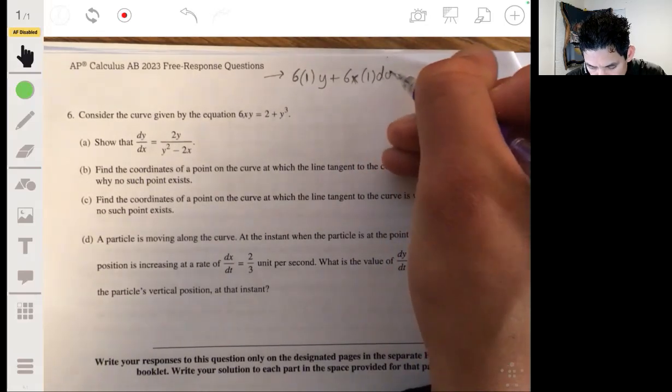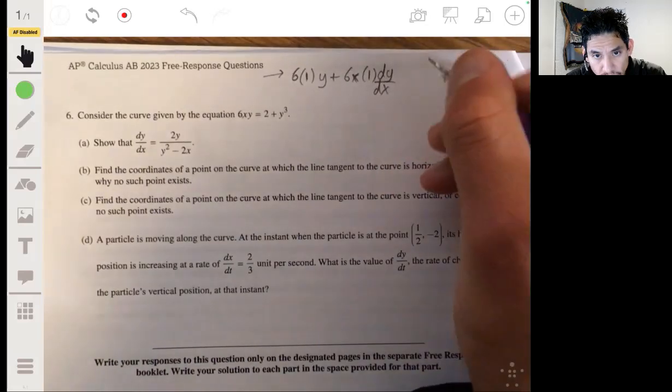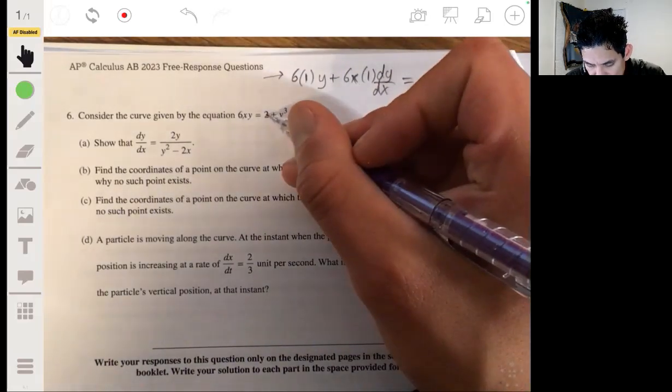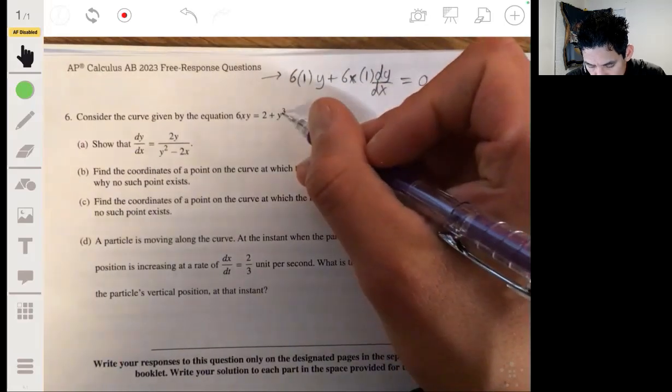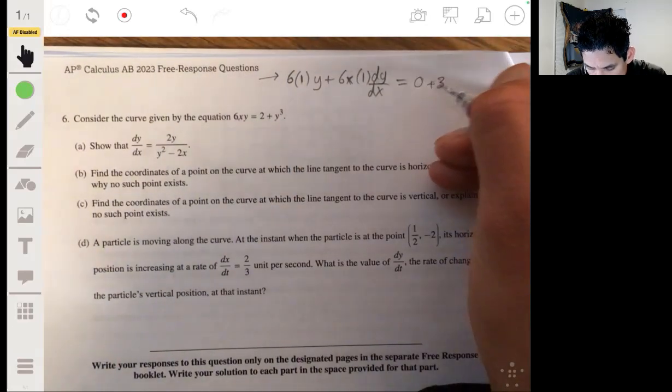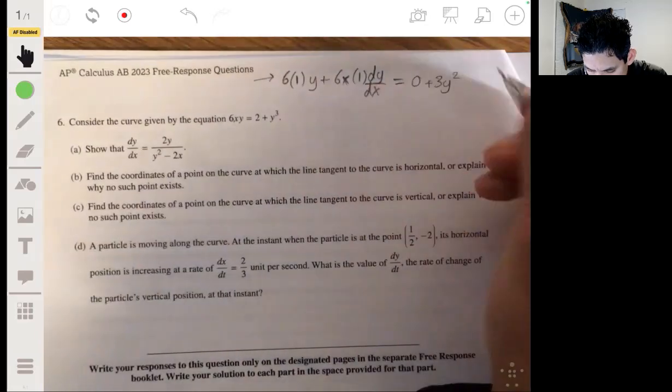What's going to happen here is that we're going to get 6 times the derivative of x first, which is just 1. So 6 times 1, we're going to leave the y as is, plus 6x times the derivative of y, which is 1, but then we got to multiply it by dy/dx. That will be equal to the derivative of 2, which is just 0, plus the derivative of y cubed, which is 3y squared, times again dy/dx.